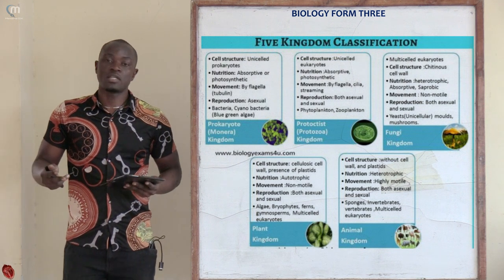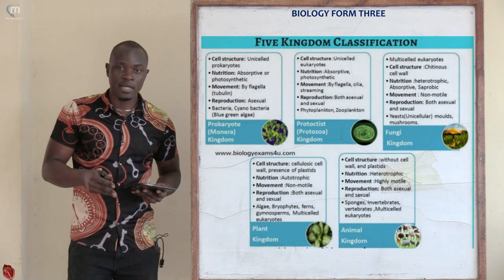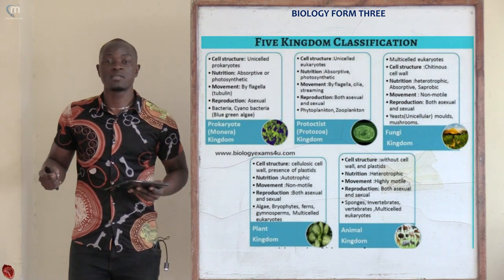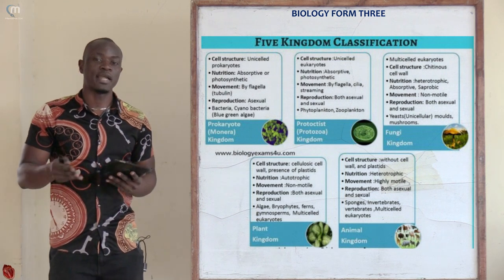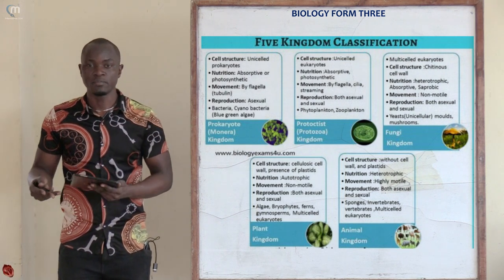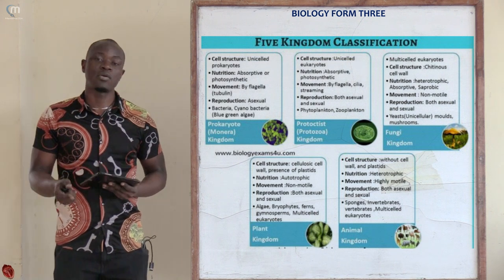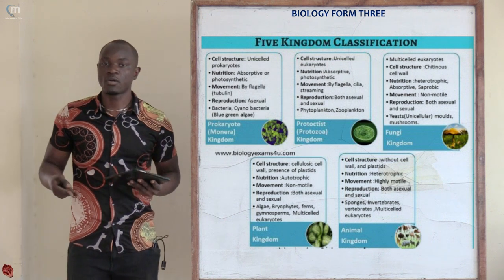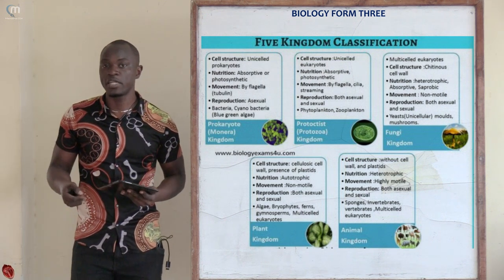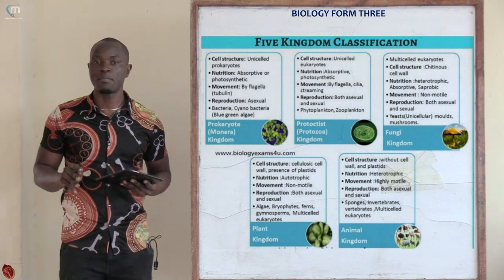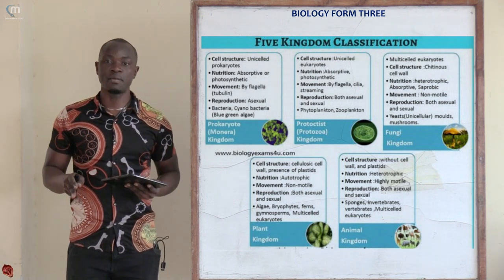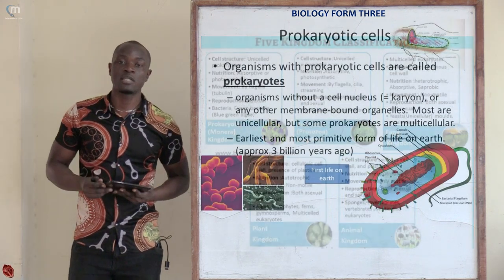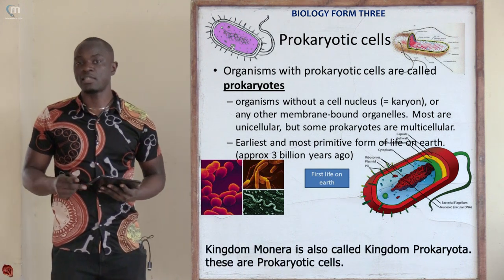In classification, we have different kingdoms. We have Kingdom Animalia, comprising all animals; Kingdom Plantae; Kingdom Fungi; Kingdom Protoctista — which can also be called Kingdom Protista or Kingdom Eukaryota; and the last kingdom is Kingdom Monera, which is the smallest kingdom comprising only one organism, the bacteria.